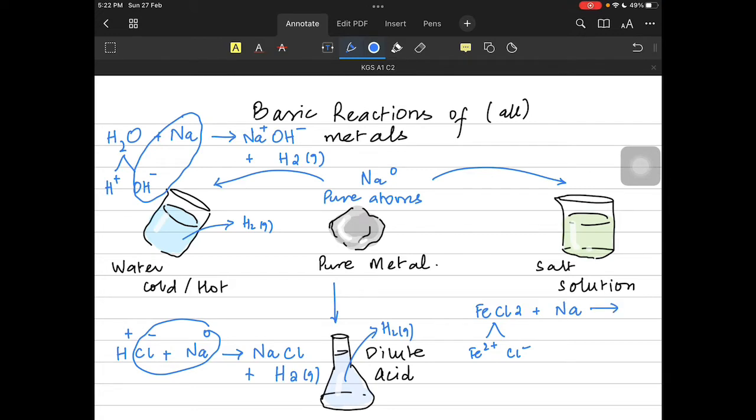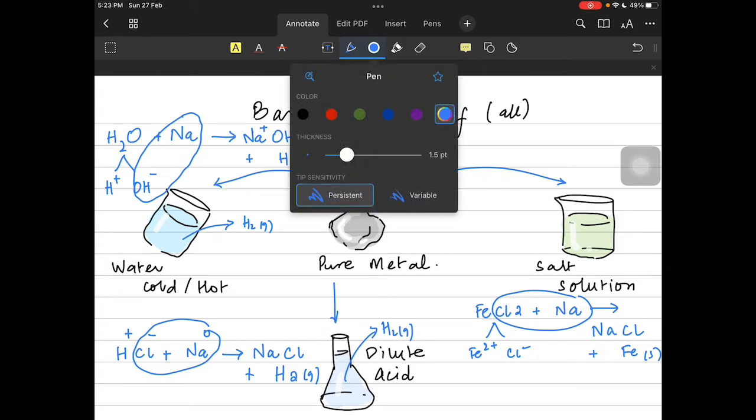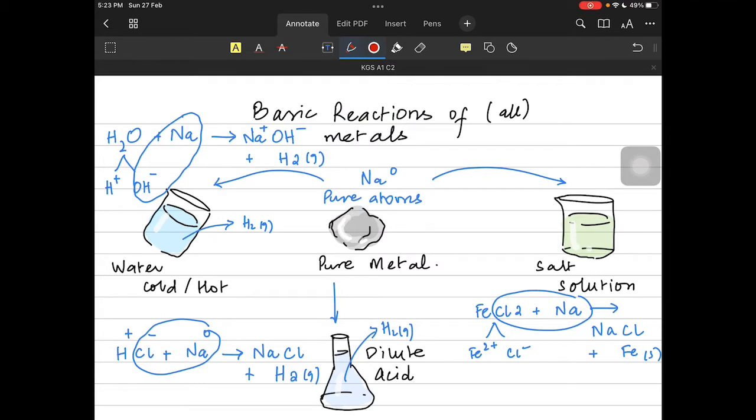If sodium reacts, sodium tries to make a bond with the chloride ion because sodium will become a plus one and chloride is a minus one and it will separate the iron, it will displace the iron. So you'll observe that the iron metal is trying to settle down. This is the basic idea of how reactive metals behave.